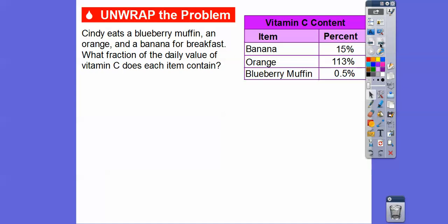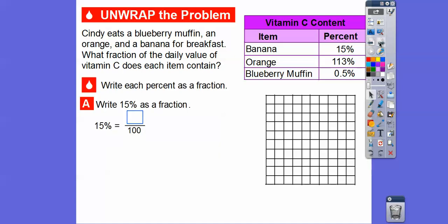So here we go. Cindy eats a blueberry muffin, an orange, and a banana for breakfast. So what fraction of the daily value of vitamin C does each item contain? We're going to change 15% to a fraction, we're going to change 113% to a fraction, and then 0.5% as a fraction. We're going to change all those percents to fractions.